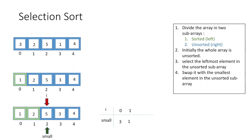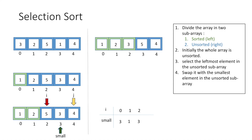Incrementing i by 1 to select the leftmost element in the unsorted sub-array and equating small to i, both i and small have index 2. Using j to find the smallest element, 3 is smaller than 5, so we equate small to j and small now has index 3. Moving on, 4 is greater than 3, so there is no change in small. In the final step, we swap the values at i and small, resulting in an array with 1, 2, 3 in the sorted sub-array.